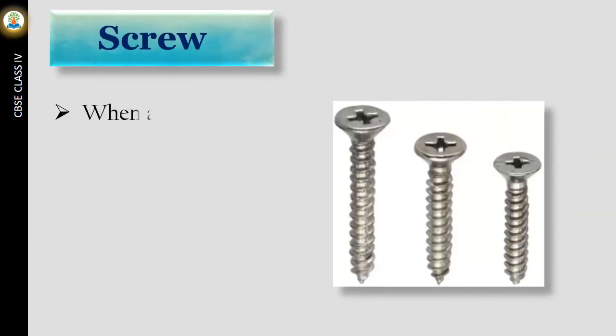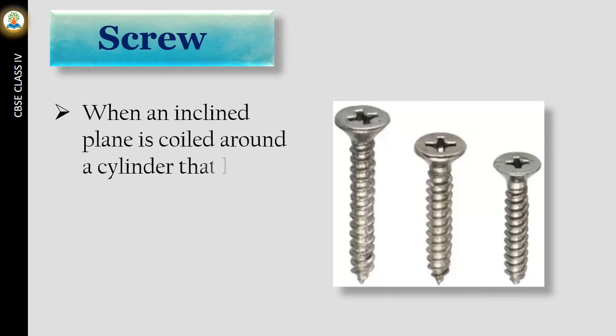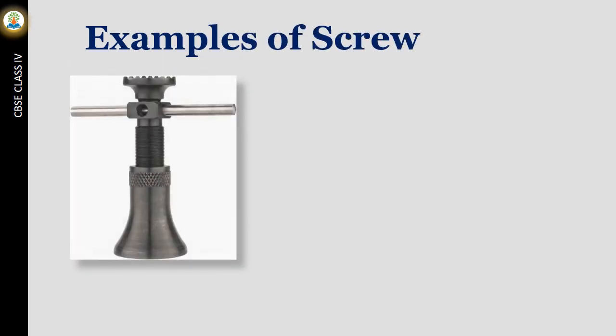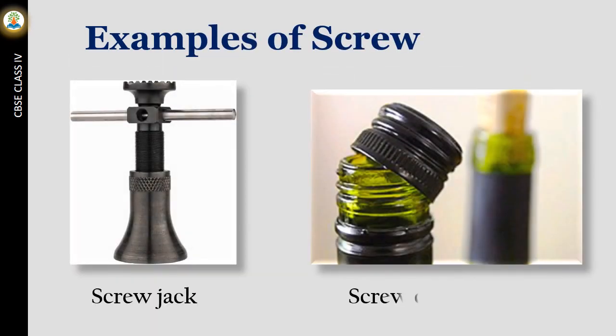When an inclined plane is coiled around a cylinder that has a sharp pointed end, it forms a screw. It fits between objects and holds them together. Examples of screws are screw cap of a bottle and screw jack.